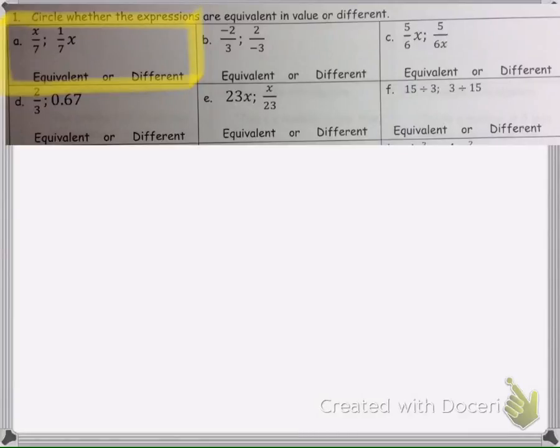In this problem, we are asked if the two expressions are equivalent or if they are different. The first one is x over 7, or x divided by 7, and then we have one-seventh x, or one-seventh times x.